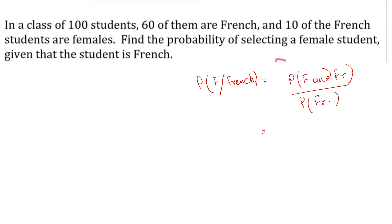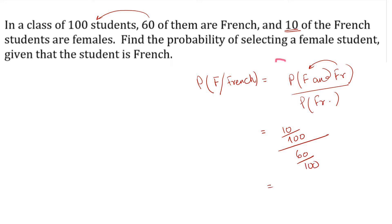Using the formula: P(female|French) = P(female ∩ French) / P(French). There are 10 French female students out of 100, and 60 French students out of 100. So the answer is (10/100) ÷ (60/100). The 100s cancel, giving 10/60 = 1/6. Multiply by 100 to express as a percentage if needed.